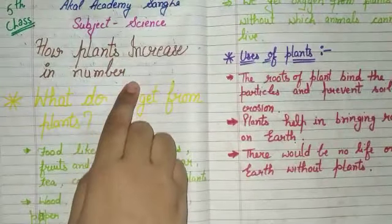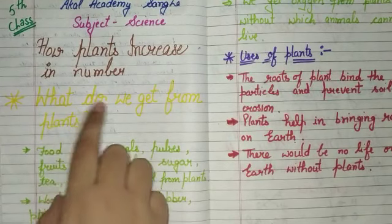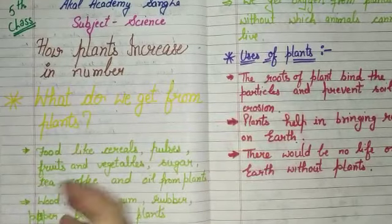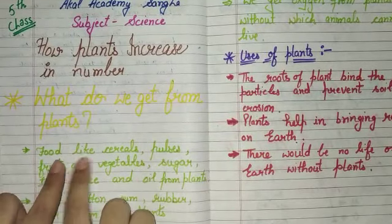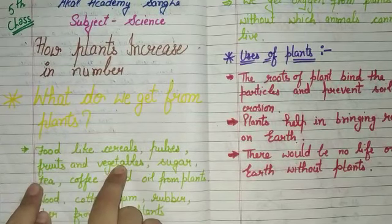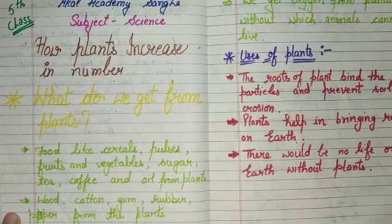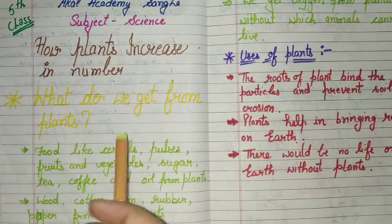We know that trees are essential for our life. So our first topic is: what do we get from plants? We get from plants cereals, pulses, fruits, vegetables, sugar, tea, coffee, and oil. The food that we eat, we get from plants.